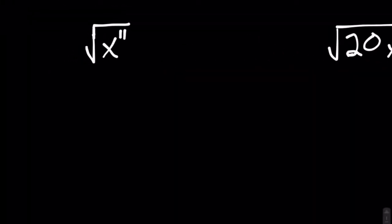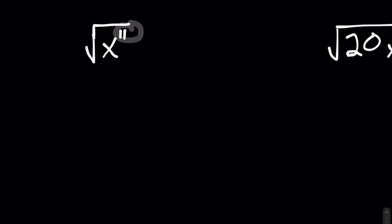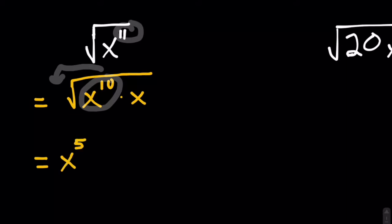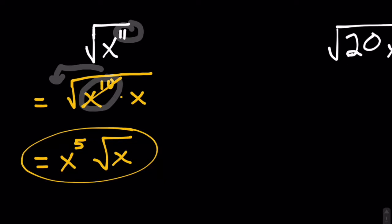Let's use x to the eleventh as an example. We can't do anything with an odd power like 11, so we're going to rewrite the radicand as the product of an even and an odd power. We'll use x to the tenth times x — that's the easiest pair that multiplies to give us x to the eleventh. Even powers like x to the tenth have nice square roots, so we take the power and divide by two: x to the fifth. That leaves only x in the radical. Final answer: x to the fifth times the square root of x.